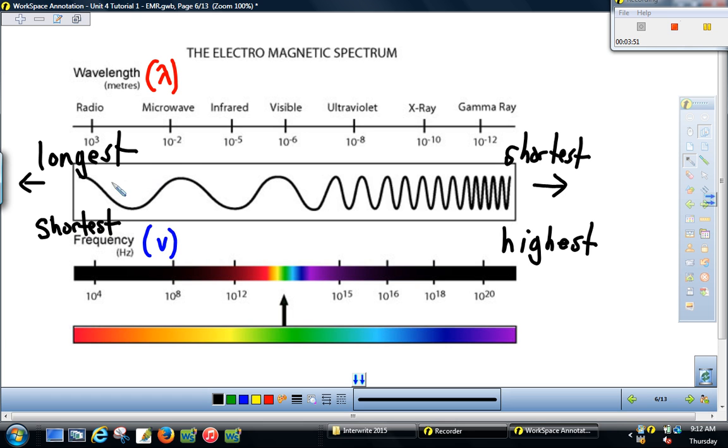Alright. So there's an inverse relationship between these two properties. So the longer the wave, the lower the frequency. Let me change that. So longest waves had the lowest frequency. Shortest waves had the highest frequency. And as we go left to right across here, the energy of the wave, the energy of the photon increases.